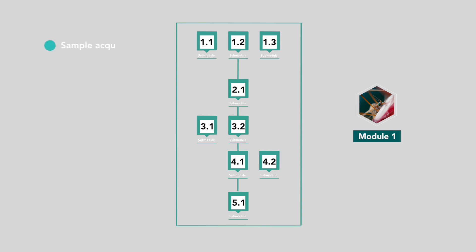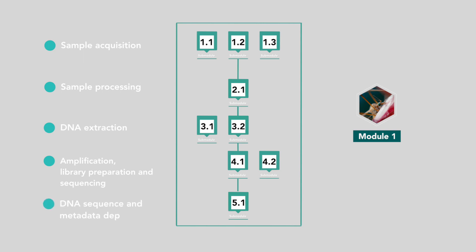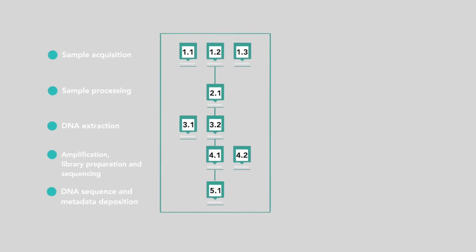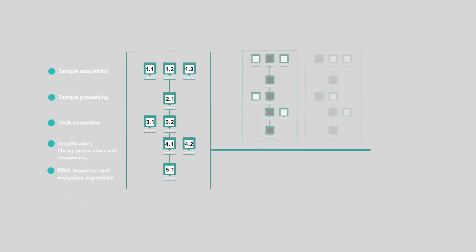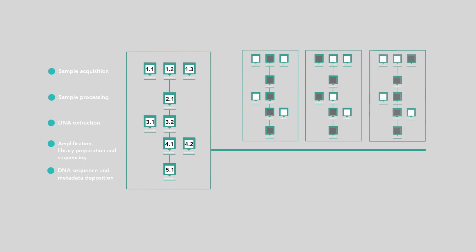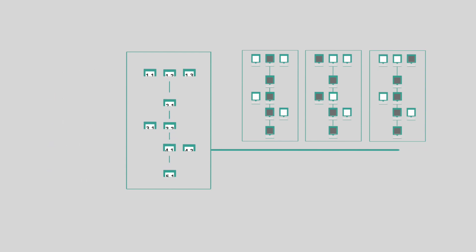The five steps are: sample acquisition, sample processing, DNA extraction, amplification, library preparation and sequencing effort, and DNA sequence and metadata deposition. Within this framework, different data generation pipelines can be configured within a module by choosing among submodule options.